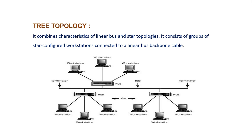Tree topology is a hybrid topology that makes use of both bus and star topology. It consists of groups of star-configured workstations connected to a linear bus cable. The main advantage is if a particular hub goes down, only the workstations connected to that hub will go down. However, if the backbone bus goes down, then the entire network will go down.